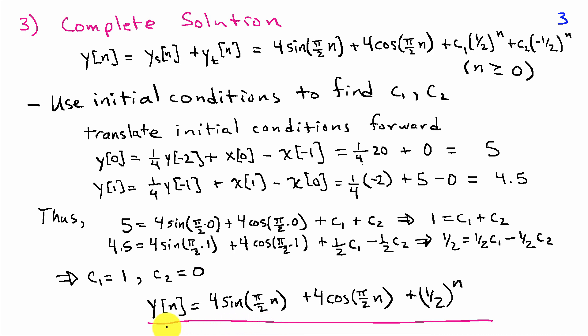So our final solution is y[n] = 4 sin(π/2 n) + 4 cos(π/2 n) + (1/2)^n. We obtained this by first finding the steady-state response, then finding the form of the transient response, combining them, and using the initial conditions to find the unknown coefficients c1 and c2 in the transient part.